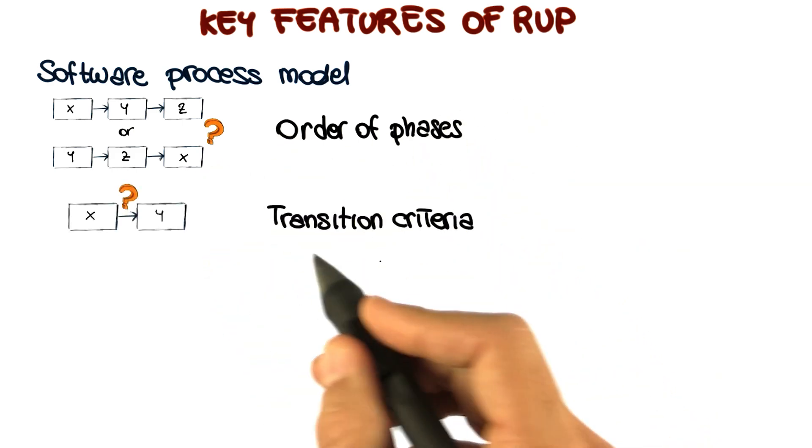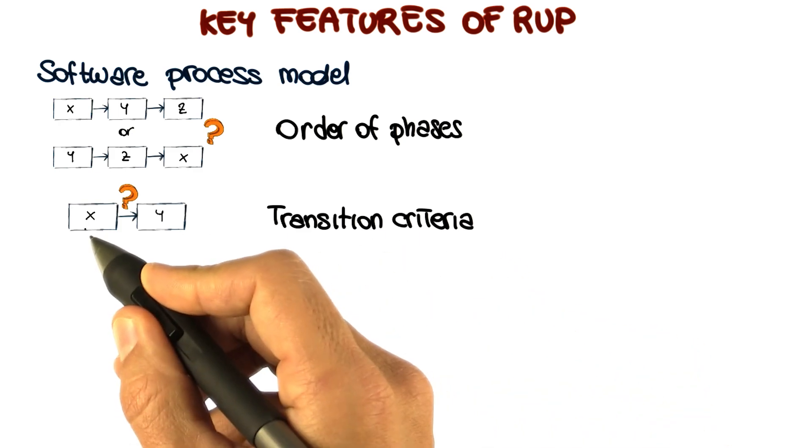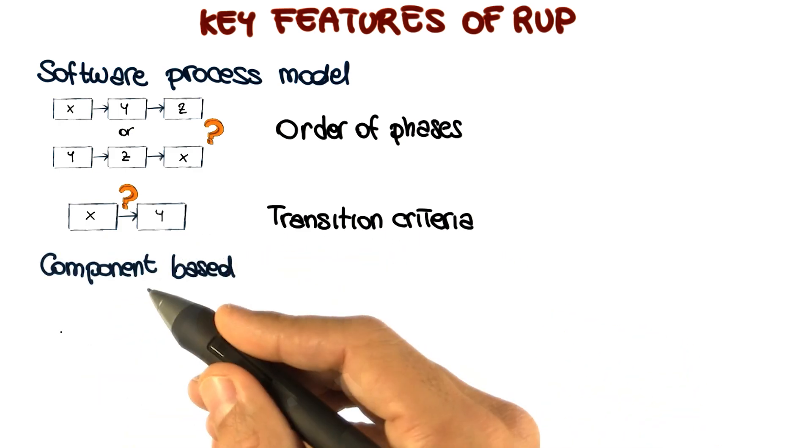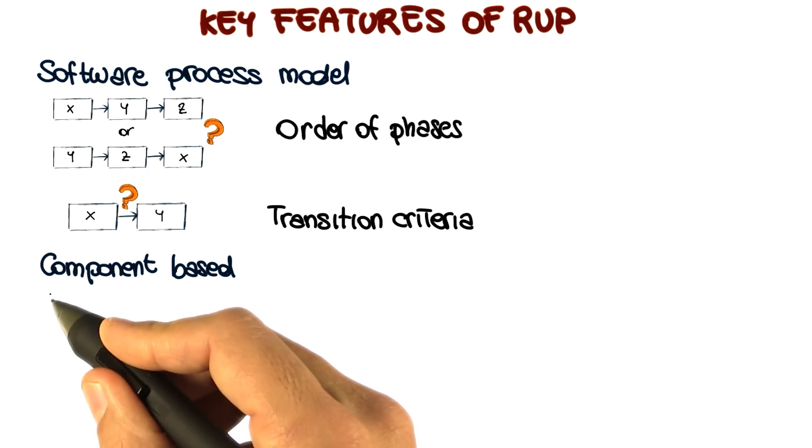And the second thing is that it also prescribes transition criteria, so when to go from one phase to the next. The second key feature of RUP is that it is component based.